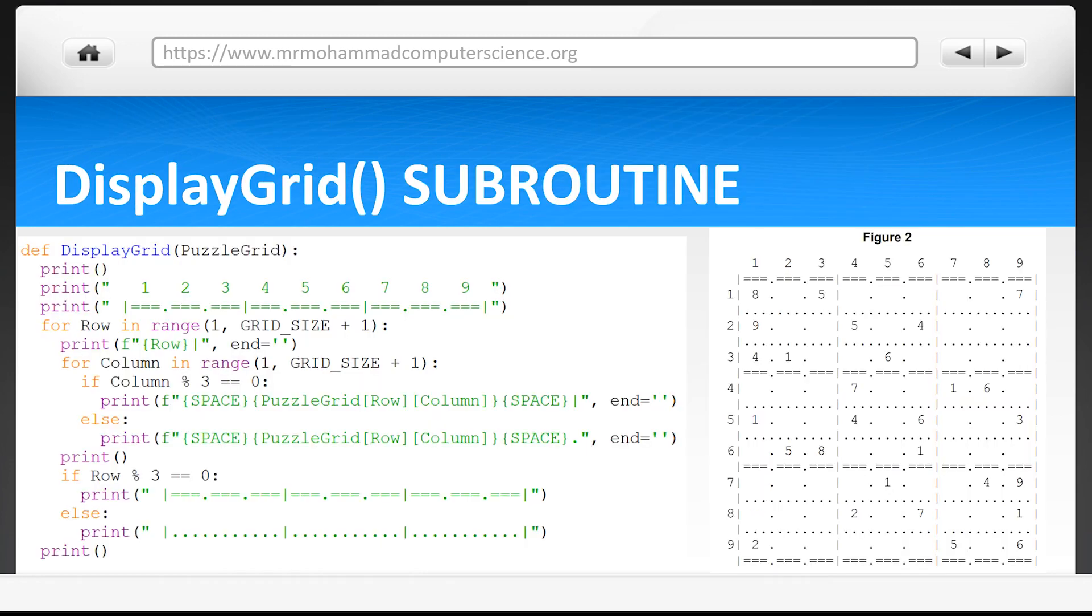The first thing we see is a print with an empty set of brackets. This outputs a blank line. After that we can see an entire row of numbers which we can assume are references to each column. On the next line we are outputting some symbols. Now if you look at the PDF file that AQA provided, figure 2 which I've put here shows you what this line is being used for.